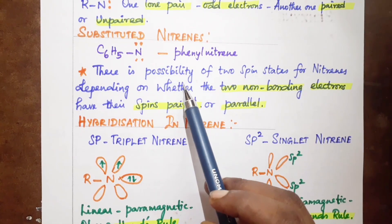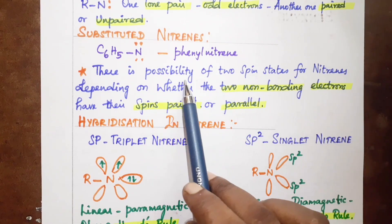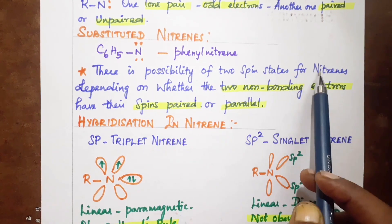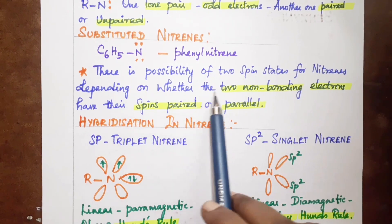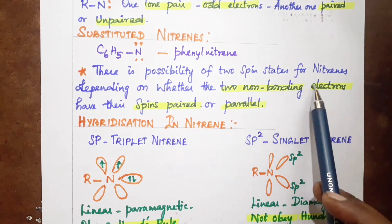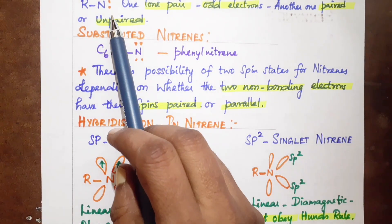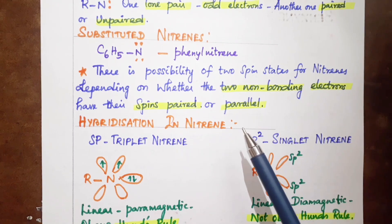There is a possibility of two spin states for nitrenes depending on whether the two non-bonding electrons have their spins paired or parallel.